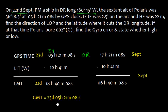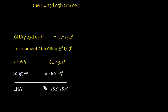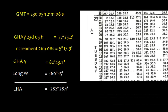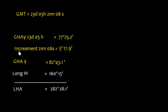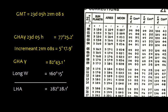We've established the GMT time: 23rd September, 05 hours 21 minutes and 08 seconds. Our next target is to find LHA. For that, we need this GMT time. Looking in the Nautical Almanac for 23rd and 05 hours, the value for Aries is 77 degrees 25.2 minutes. For the increment of 21 minutes and 08 seconds, we get 5 degrees 17.9 minutes in the Aries column.